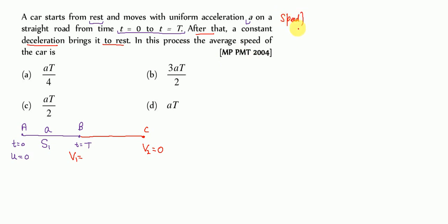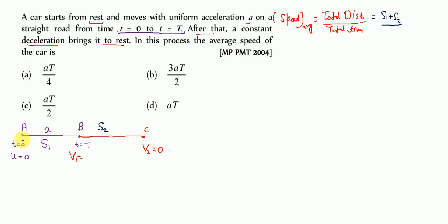The average speed equals total distance upon total time. Let S1 be the distance from A to B, and S2 be the distance from B to C. So we need S1 plus S2 divided by the total time. The time from A to B is T, and the time from B to C is T2.